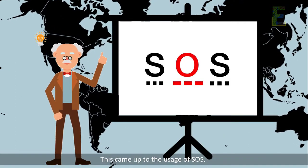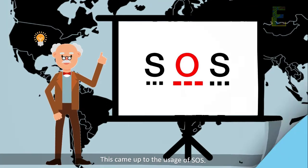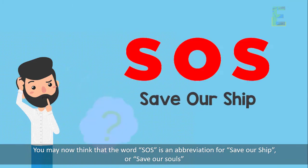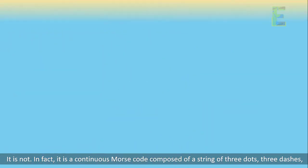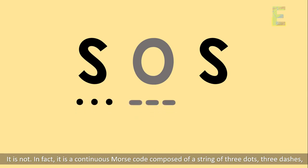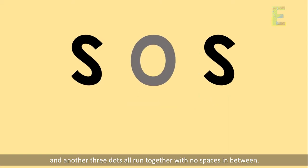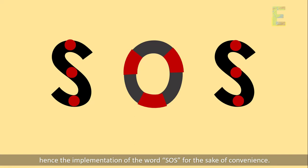This gave rise to the usage of SOS. You may think that the word SOS is an abbreviation for Save Our Ship or Save Our Souls — it is not. In fact, it is a continuous Morse code composed of a string of three dots, three dashes, and another three dots, all run together with no spaces in between. According to the International Morse Code, the three dots form a letter S, while the three dashes form a letter O. Hence, the implementation of the word SOS for the sake of convenience.